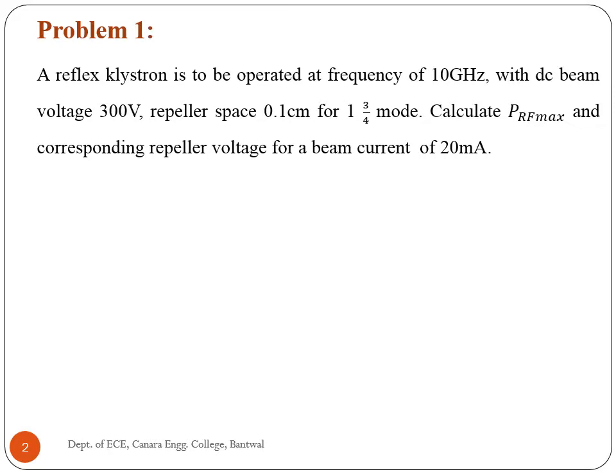First problem: a reflex klystron is to be operated at a frequency of 10 gigahertz with DC beam voltage 300 volts, repeller space 0.1 centimeter, for 1 and 3/4 mode. Calculate maximum RF power and corresponding repeller voltage for a beam current of 20 milliamperes.